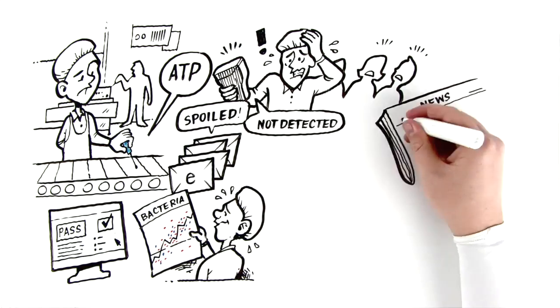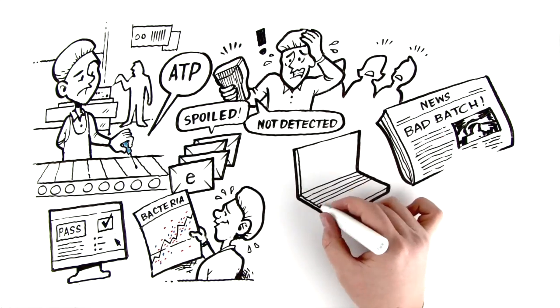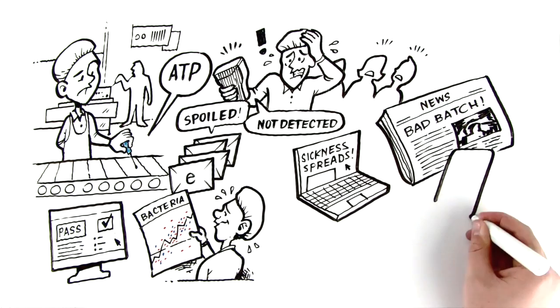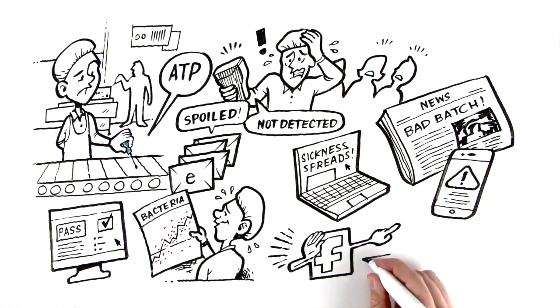Jim knows one bad batch of product would be a nightmare and could lead to recalls, sickness, loss of the plant's national chain contracts, and a negative brand image that would spread like wildfire on social media.